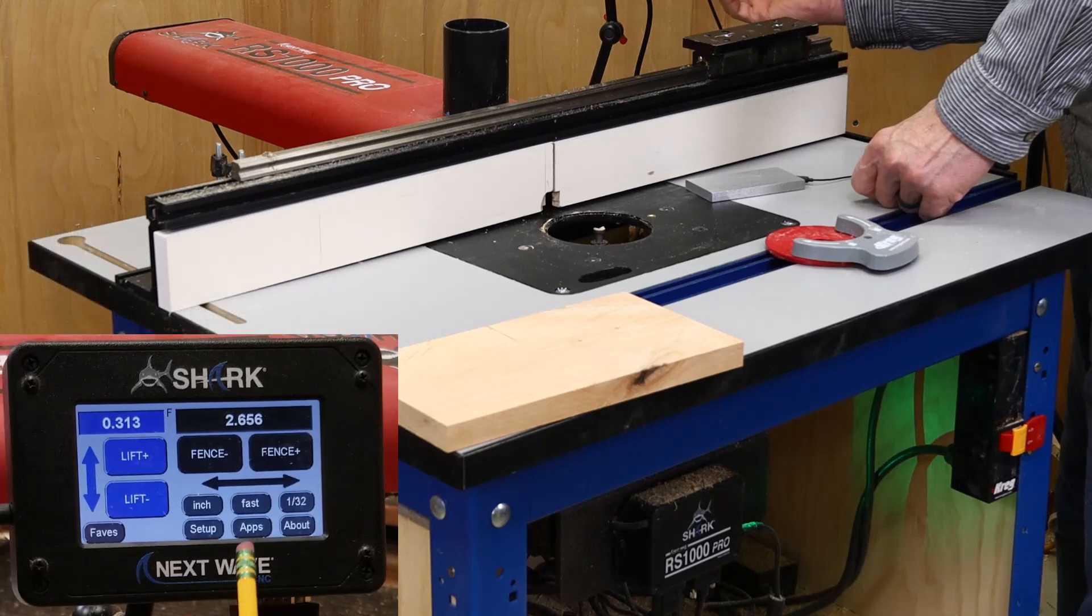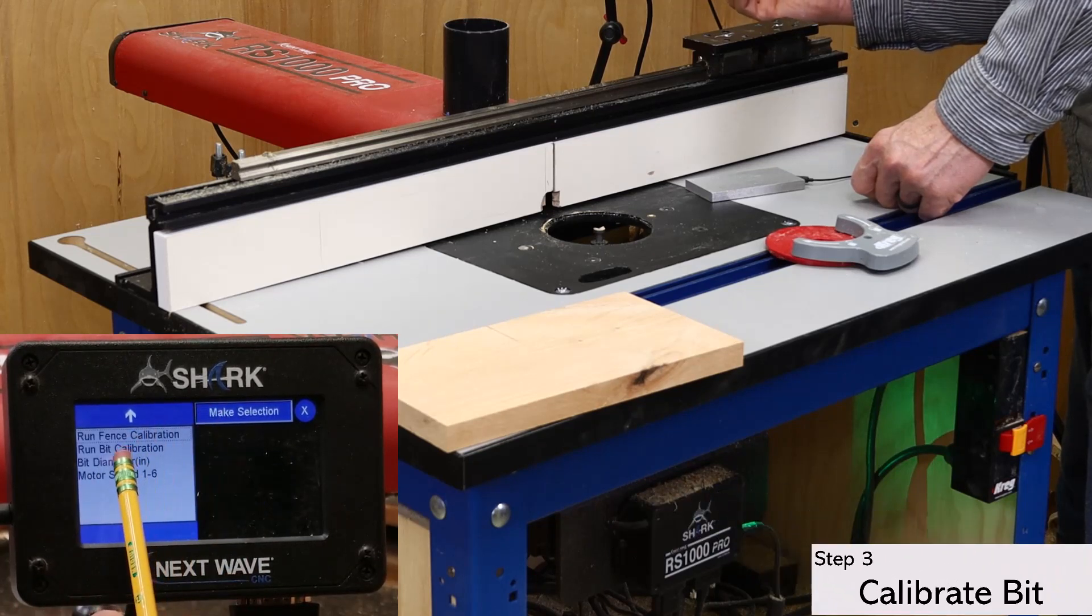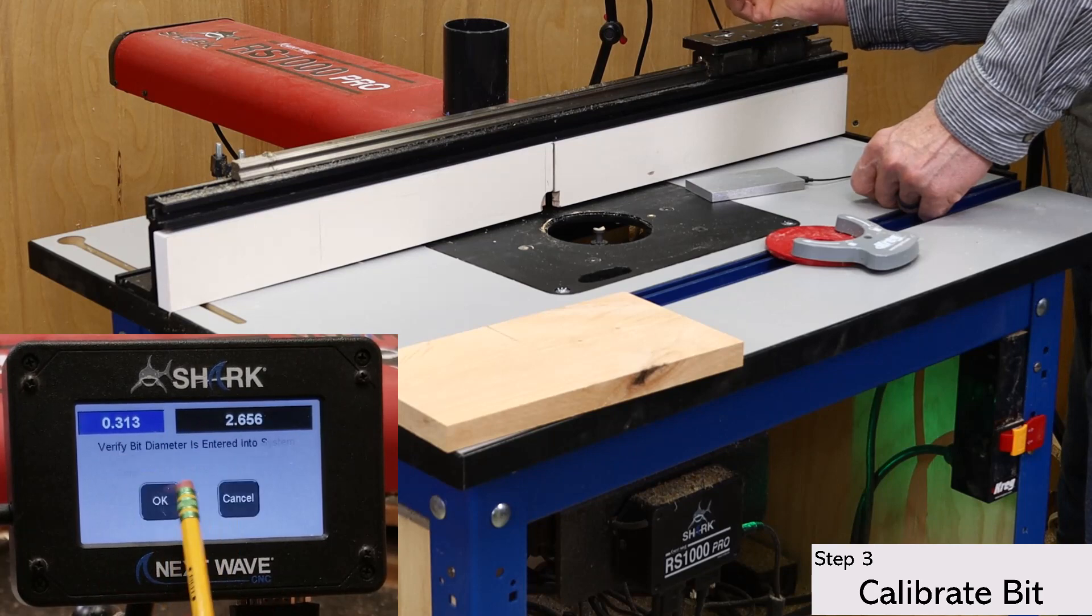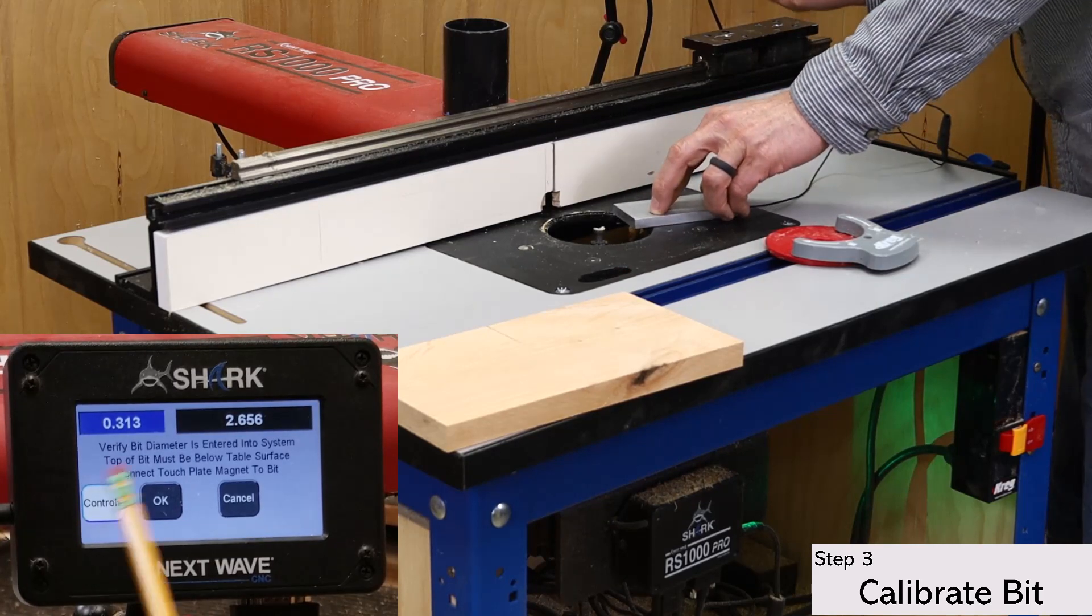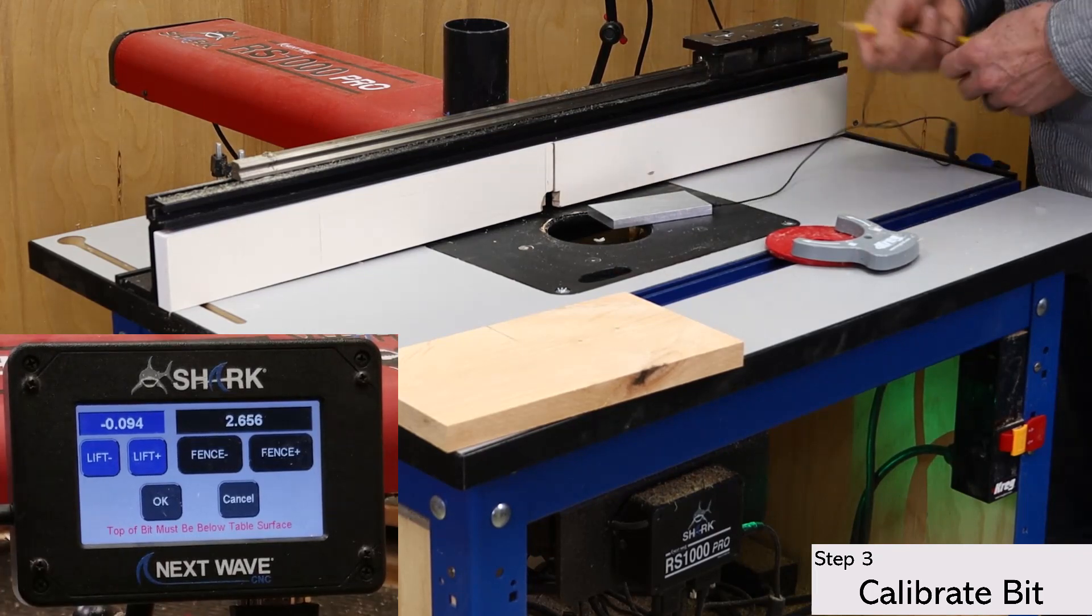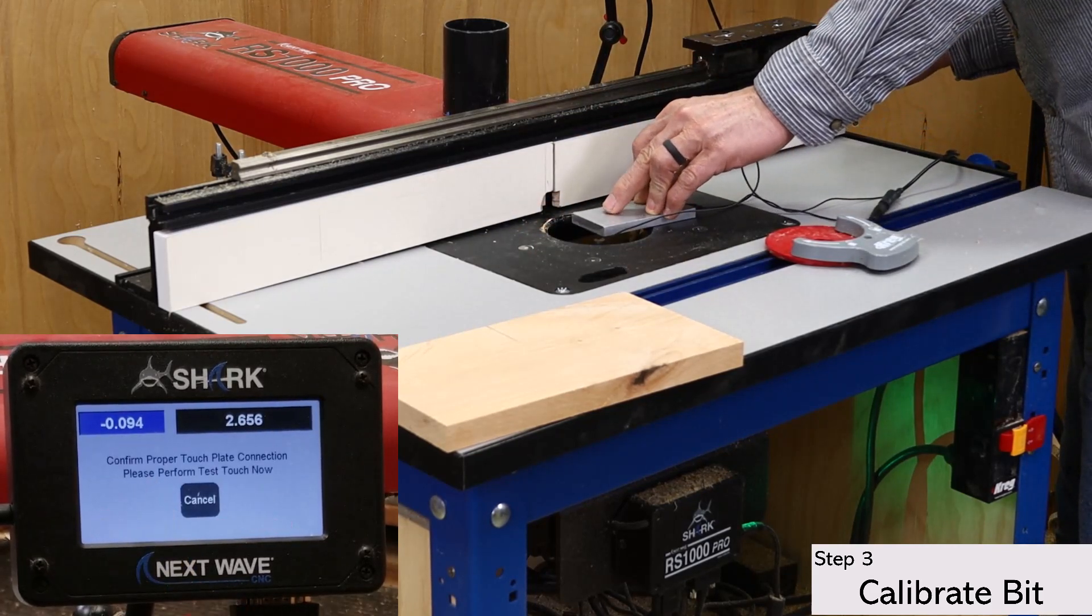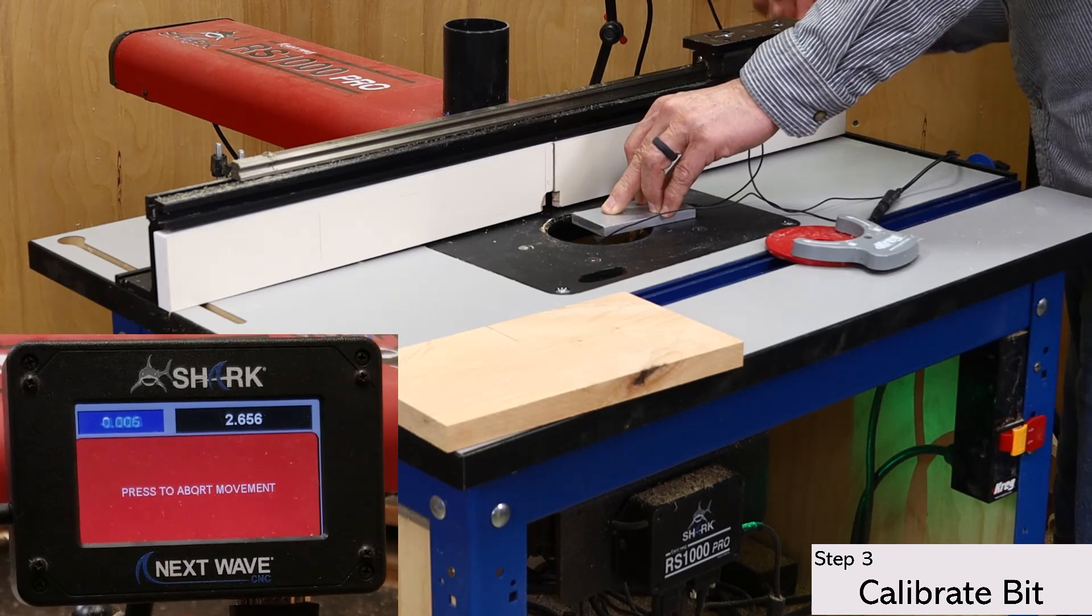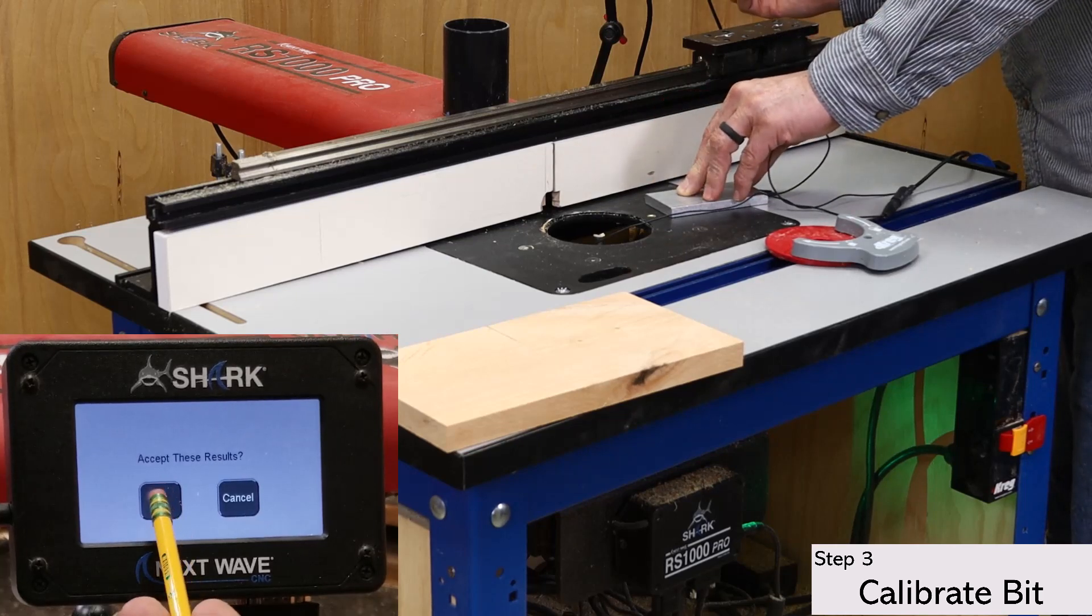Next, open the apps menu and select the touch plate calibration, and then select bit calibration. The bit needs to be below the table for this step. This one is still a little high, so I'll use the white control button to open the control window, which allows me to lower the bit without going back to the main screen. Next, connect the magnet to the router bit or the collet and press OK to continue. Touch the plate to the bit to verify that you have a good connection, and then press OK again to proceed with the bit calibration. The bit will rise up, touch the bottom of the plate, and then go back down below the table.